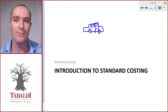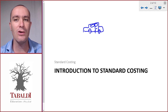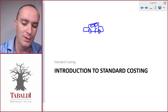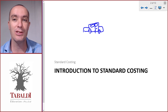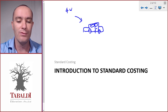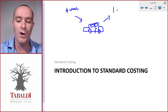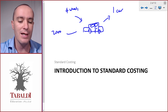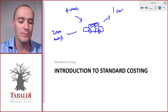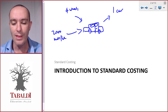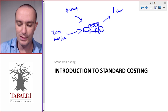Since it's a repetitive process and all the cars look the same, we would assume that each car would cost the same to make. There's also a fixed relationship between the inputs and the outputs. The inputs might be four wheels for one car, or 2,000 screws or nuts and bolts, and then one car comes out of that.